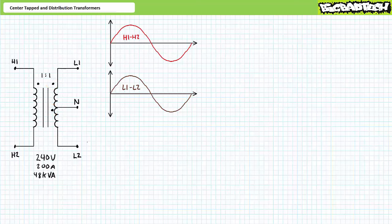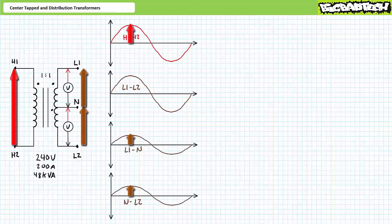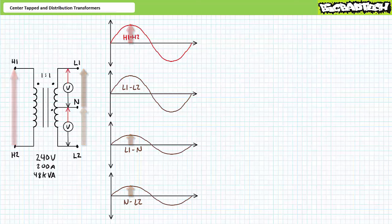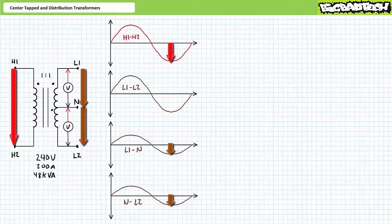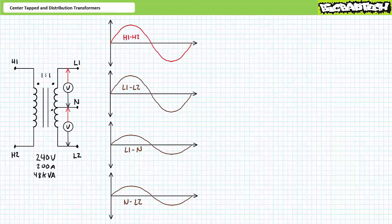Keep in mind the system is presently floating with no reference to ground. When H1 to H2 peaks positively, a voltmeter placed positive-negative L1 to N would also peak positively, as would a voltmeter placed positive-negative N to L2. Similarly, when H1 to H2 valleys negatively, a voltmeter placed positive-negative L1 to N would valley negatively, as would a voltmeter placed positive-negative N to L2. Again, given this is presently floating with no reference to ground,